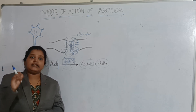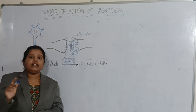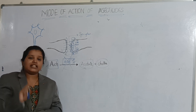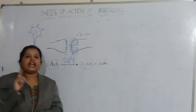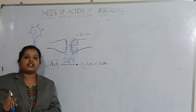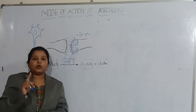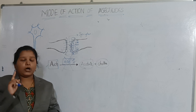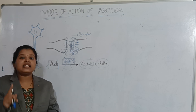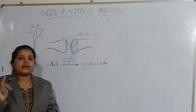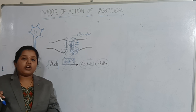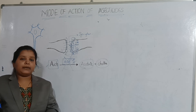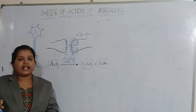There is also a difference in the mode of action between these two insecticides — organophosphate and carbamates. We call the mode of action of organophosphate insecticide irreversible action, and we call the mode of action of carbamate insecticide reversible action.